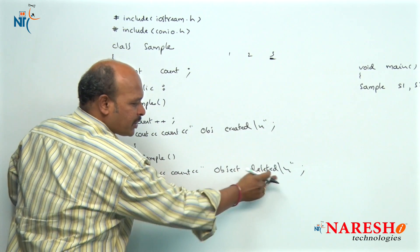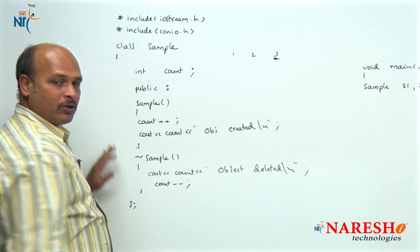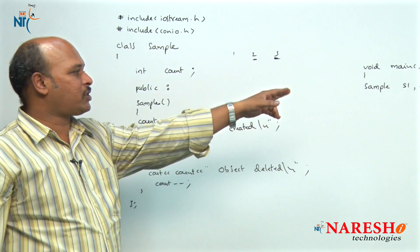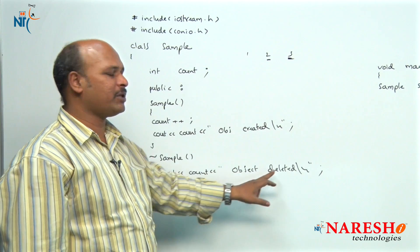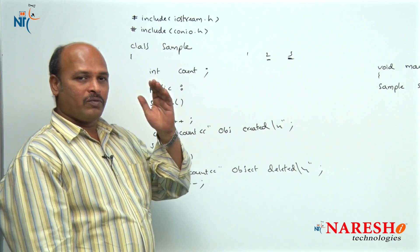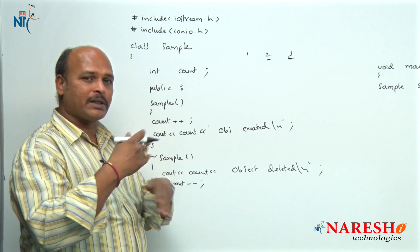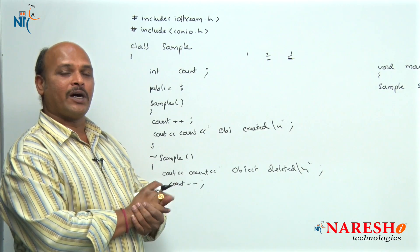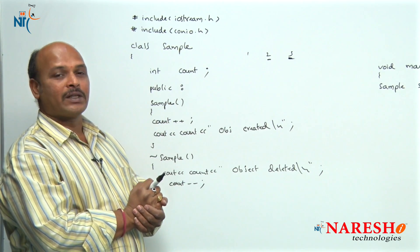Third object is deleted and count minus minus, so count value becomes 2. Next when s2 is deleted, count value is 2 — second object deleted. Then first object deleted. So the expected answer is: first object created, second object created, third object created, then third object deleted, second object deleted, first object deleted. But in this example we are going to get garbage values. Why?